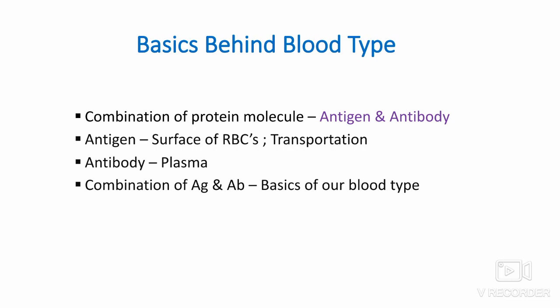The basics behind blood type: do you know why blood differs from person to person? A very simple answer — because of the combination of protein molecules called antigens and antibodies. Antigens are present on the surface of red blood cells; they help in transporting other molecules into and out of the cell, maintain the structure of RBCs, and can remove unwanted cells. Antibodies are present in plasma. The combination of antigen and antibody of the blood is the basis of our blood type, and both play a role in the immune system's defense mechanism.